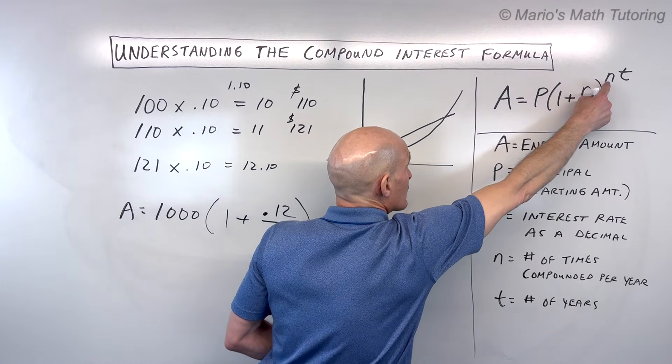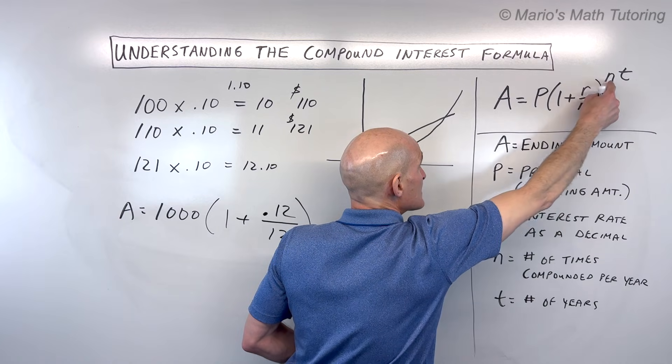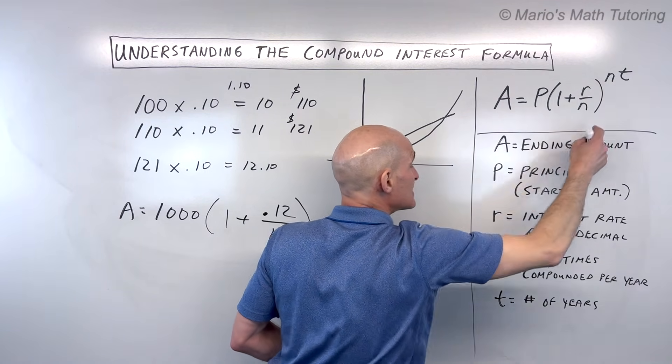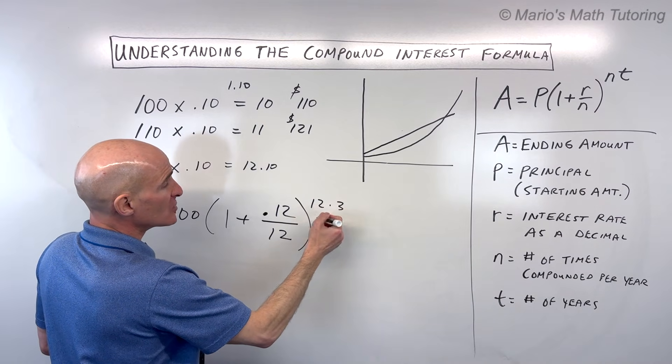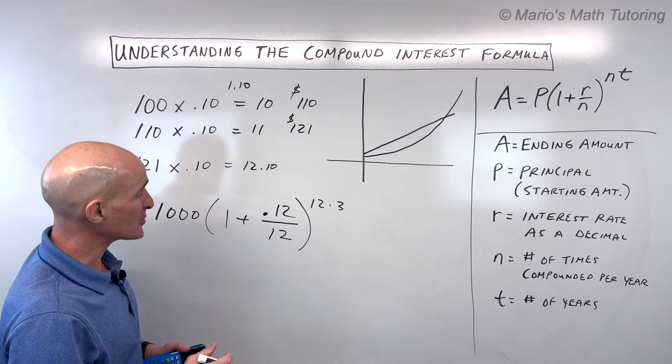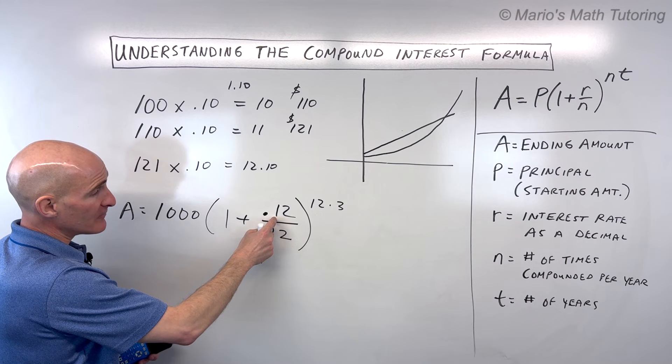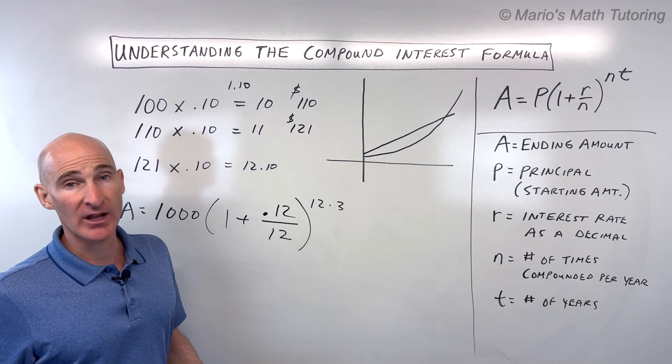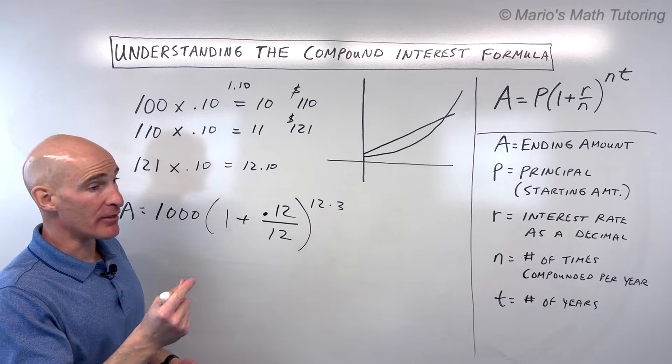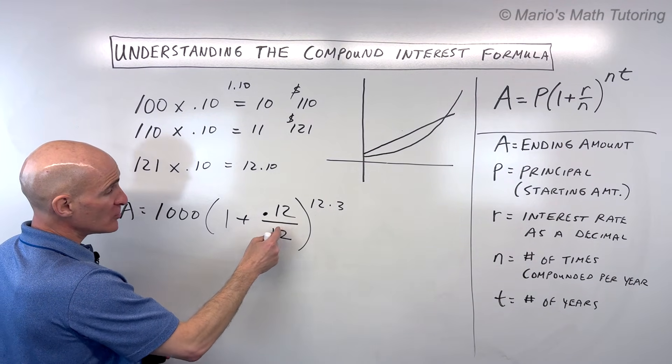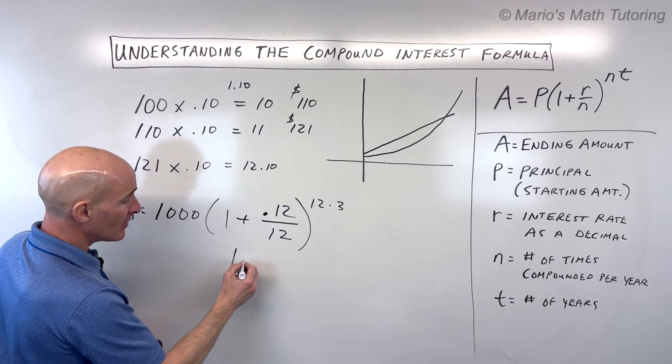And then N is the number of times you compound in a year. It's the same value for these two Ns here. And then T is the number of years. So let's just say it's three years. So it's going to be 12 times three. Now, I want to kind of illustrate how this works. So the 12% is like an annual interest rate. If you're compounding monthly, how much are you getting each month? You're actually getting 0.12 divided by 12, which is 0.01.